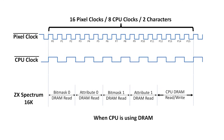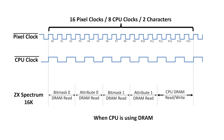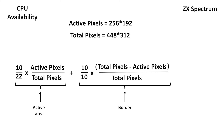During a 16-pixel block, which is 8 CPU clocks, the video circuit gets 4 memory reads in, while the CPU gets 1 read or 1 write in that cycle. Once you do the math, it means that the CPU is active for about 80% of the time.